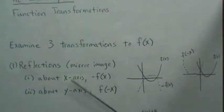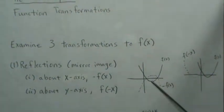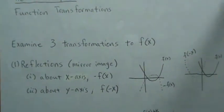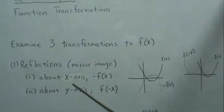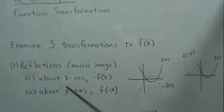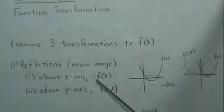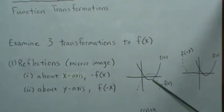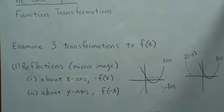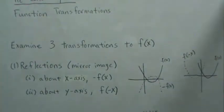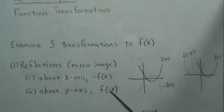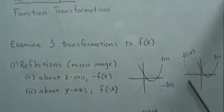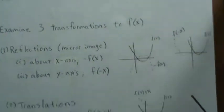Reflections mean the graph is flipped or rotated about either the x-axis or y-axis. To reflect about the x-axis, you put a negative value in front of your original function as -f(x). To flip it about the y-axis, you put a negative inside the function as f(-x).